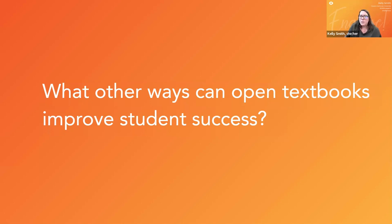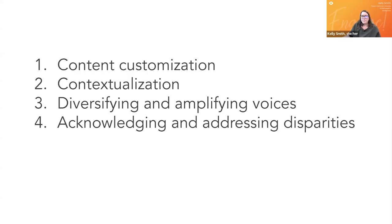This slide segues back into discussion of the theory of belonging and how open textbooks foster that beyond just cost savings. These are four ways in which open education can improve student success: through the ability to customize the curriculum, to contextualize the curriculum, by making the curriculum more inclusive, and by acknowledging systemic issues within the curriculum. The following slides provide actual examples of how open textbooks have done each of these things.